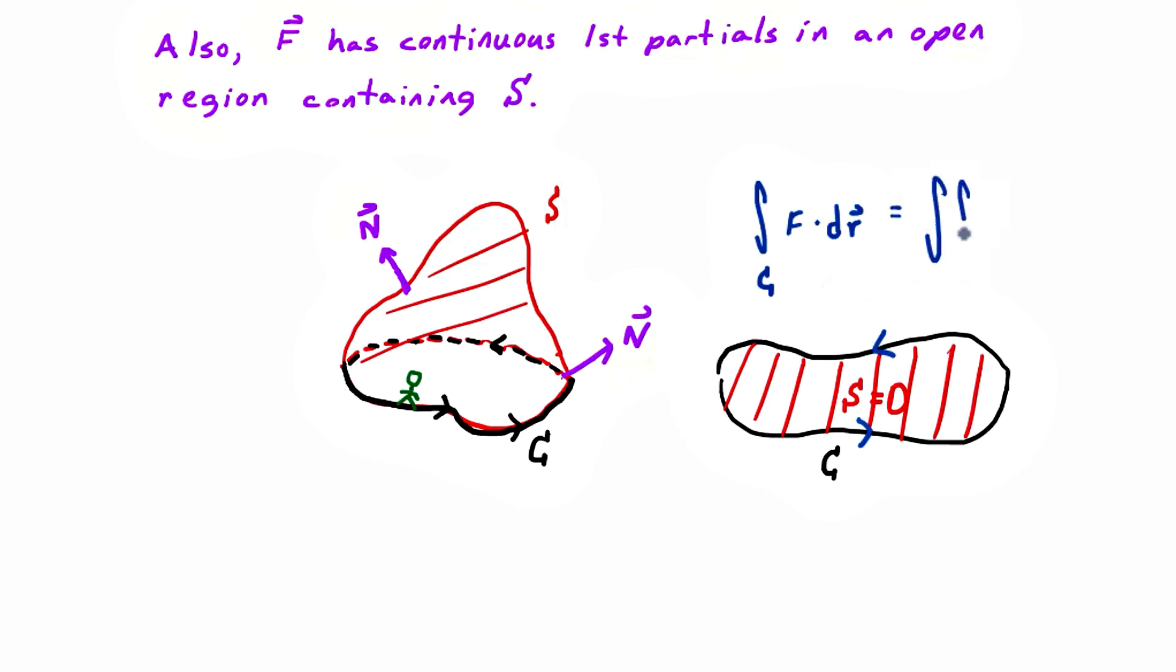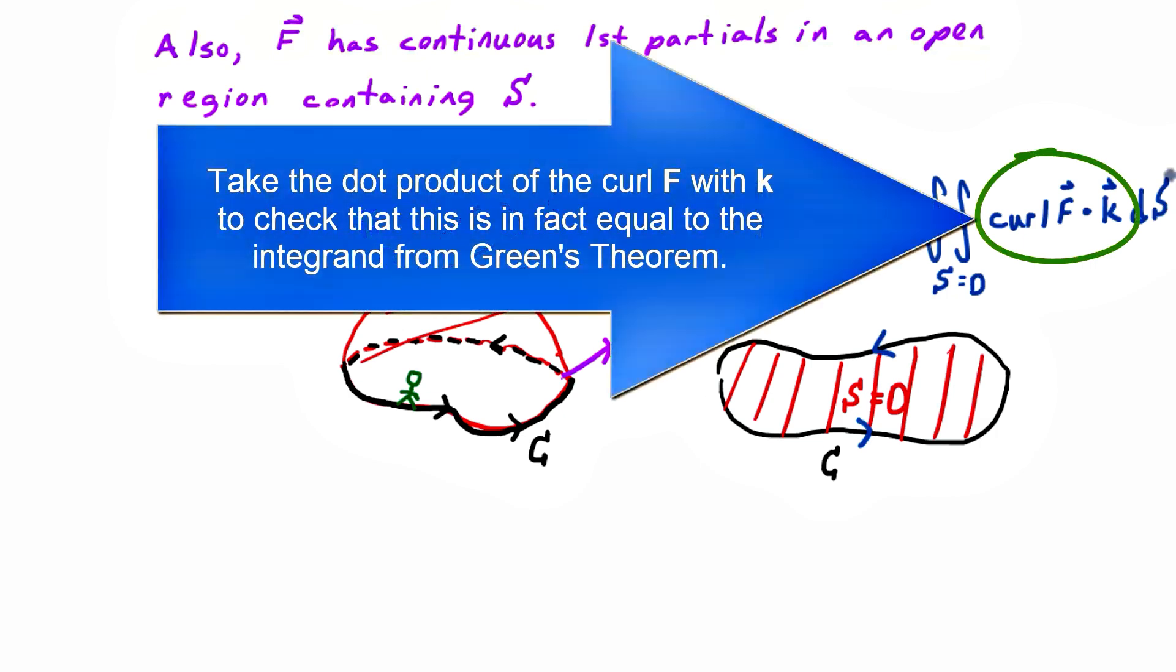We showed you last time that you will get, if you manipulate it correctly, that that line integral is equal to the surface integral, where S is equal to R or D, in this case we're calling it D, of curl of F dotted with, what's our normal vector in the plane? K, the unit normal vector, right? Well, dA is the same as dS in the plane. And so you believe this, right?